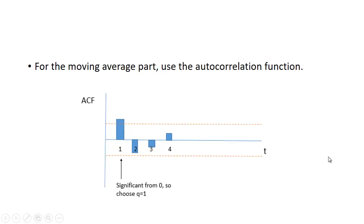Likewise, for the moving average part, we use the autocorrelation function. In this example, we happen to have one that's significantly different from zero, so we're going to choose q equals one.